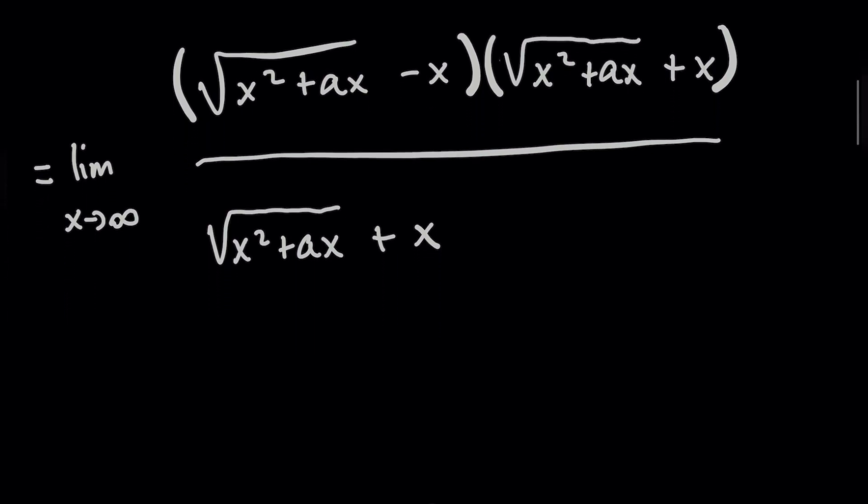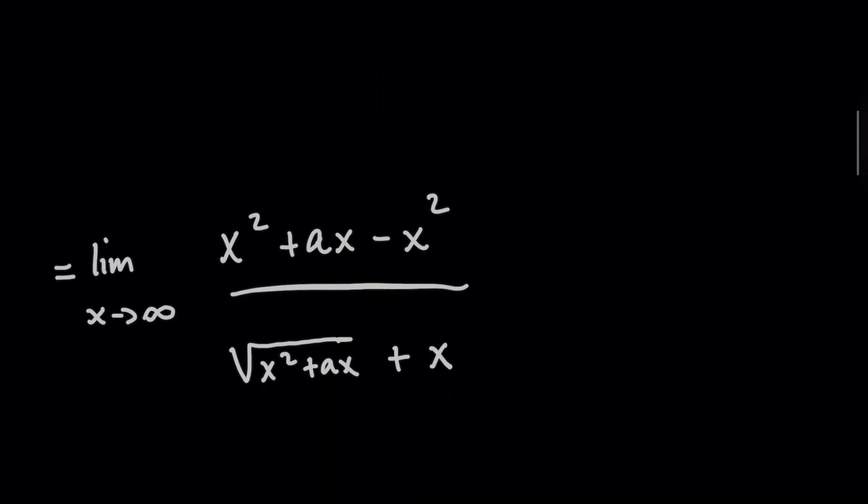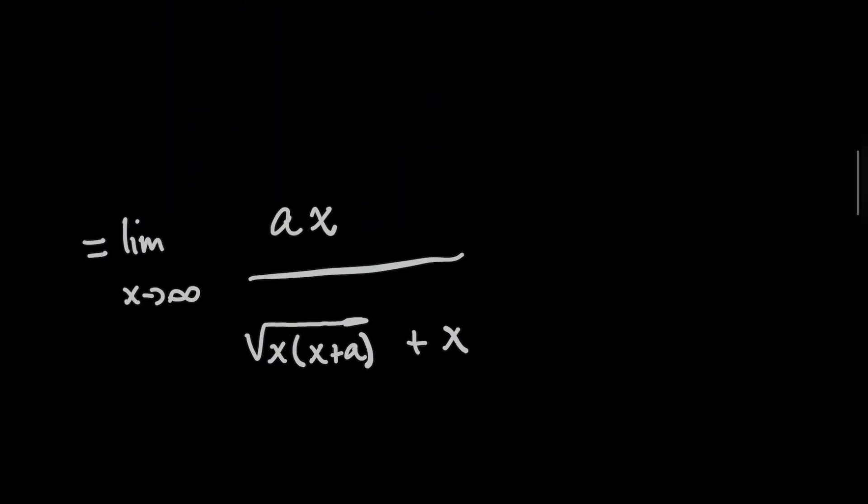So what this means is that for the numerator, we're going to be getting this on the top now when we expand that through. And by inspection, you can already see that the x squared terms are going to cancel out, giving me this new limit.